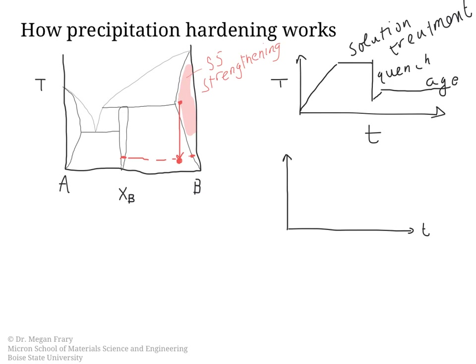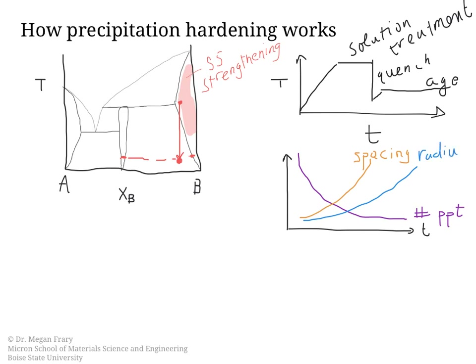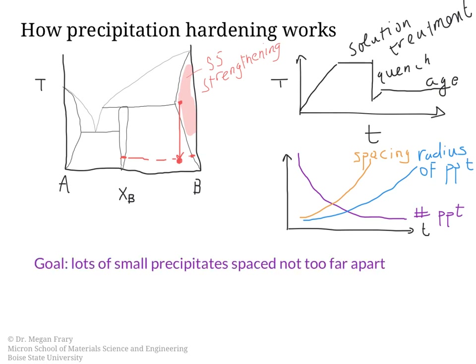Initially lots and lots of precipitates nucleate, but then they start to grow at one another's expense, so the number of precipitates will decrease in time, the spacing of the precipitates will increase — we'll start out with lots of them very near together, and then as time goes on they get further apart — and also their size increases. This is just showing the change, and so there will be some sweet spot between the size, the spacing, and the volume fraction of the precipitates. The goal is essentially to have lots of small precipitates which are spaced not too far apart.